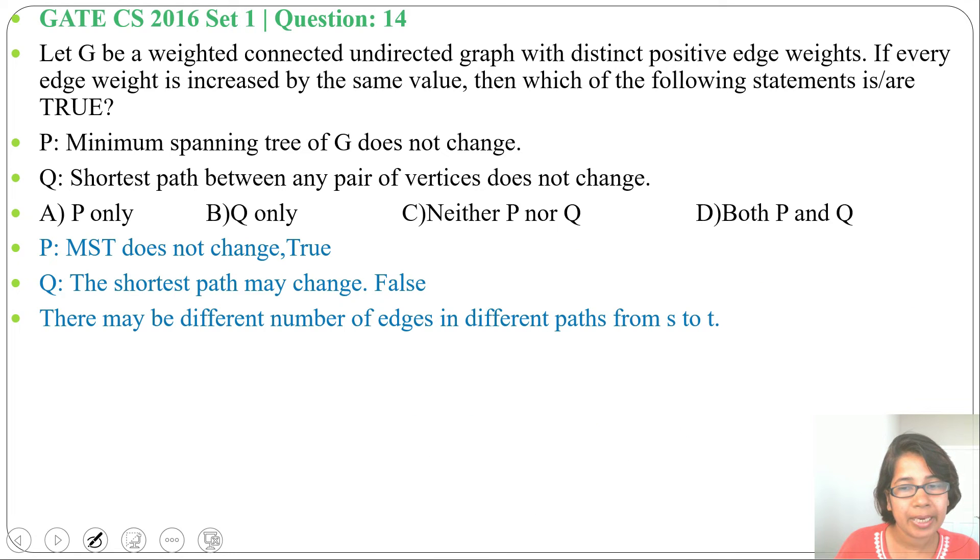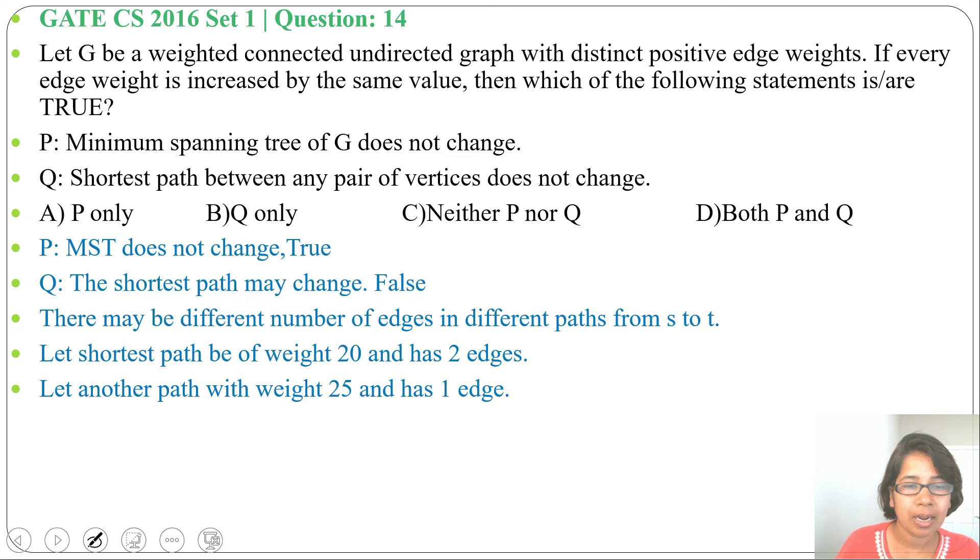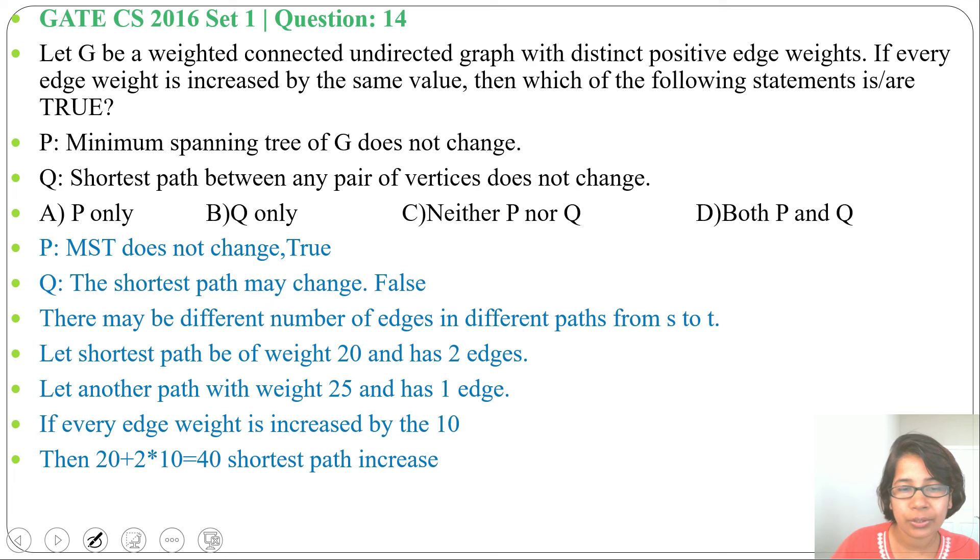There may be a different number of edges in different paths from source to destination. Let the shortest path be of weight 20 and have two edges, and another path having weight 25 and one edge. So if every edge is increased by 10, then the shortest path cost will change: 20 plus 2 multiplied by 10 will be 40.